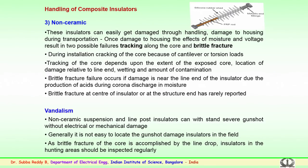Non-ceramic composite suspension and line post insulators can withstand severe gunshots without electrical or mechanical damage and are generally not easy to locate for gunshots in the field because of their structure. As brittle fracture of the core is accompanied by a line drop, insulators in hunting areas should be inspected regularly. Regular inspection is essential for EHV and UHV lines where polymer insulators are employed in areas prone to shooting.